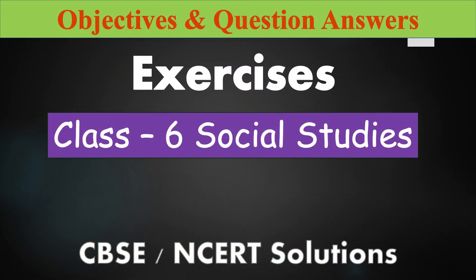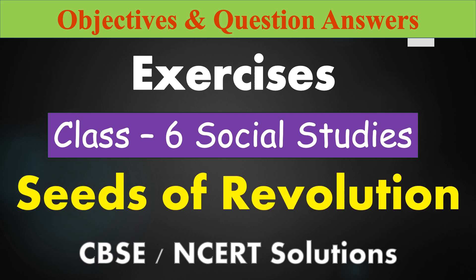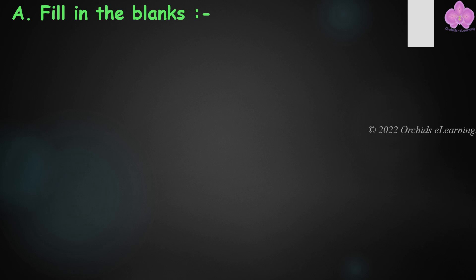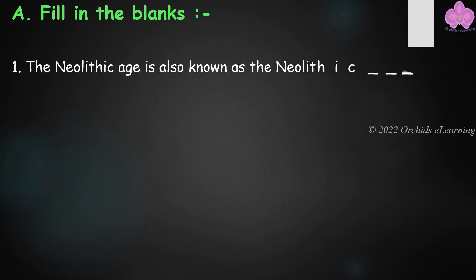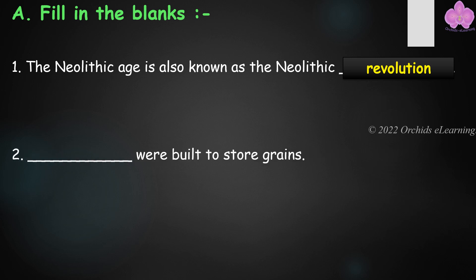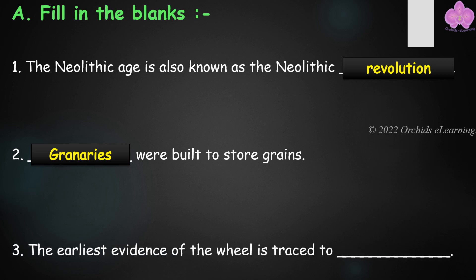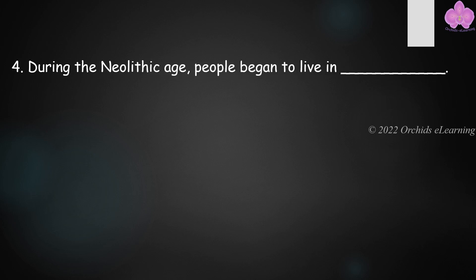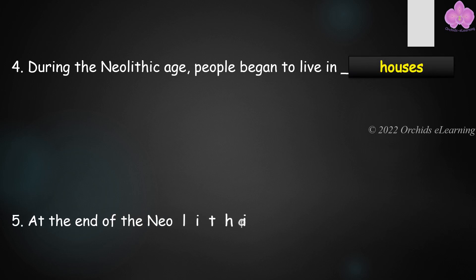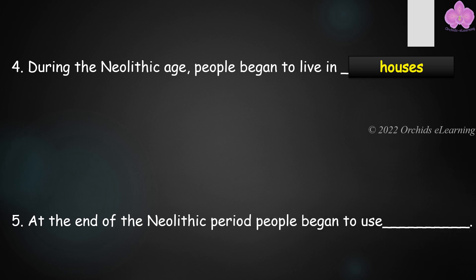Objectives and question answers of the lesson 'Seeds of Revolution', Class 6 Social Studies. Fill in the blanks: The Neolithic Age is also known as the Neolithic Revolution. Granaries were built to store grains. The earliest evidence of the wheel is traced to Mesopotamia. During the Neolithic Age, people began to live in houses. At the end of the Neolithic period, people began to use metals.